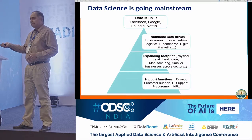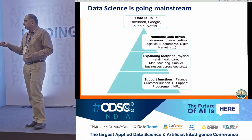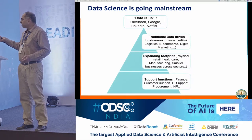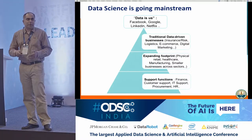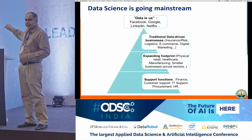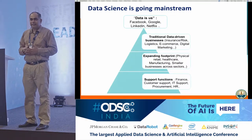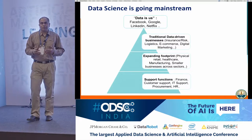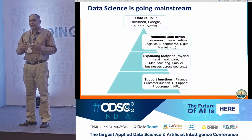Today, that's not true. Now industries like healthcare, physical retail, manufacturing, even small businesses, as well as support functions like customer support, finance, procurement, and HR are also looking at using data science. What's different about the organizations in the lower two boxes versus the upper two boxes is the kind of people you're talking to are very different. The people in the upper boxes understand data and data science. The people in the lower boxes are good at running a traditional business — they don't really understand data science or probability.